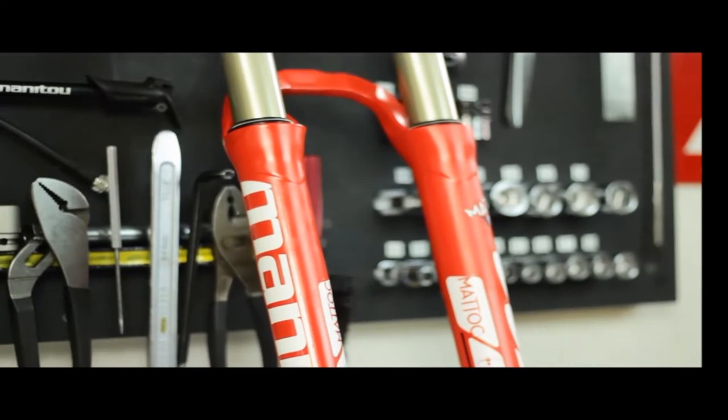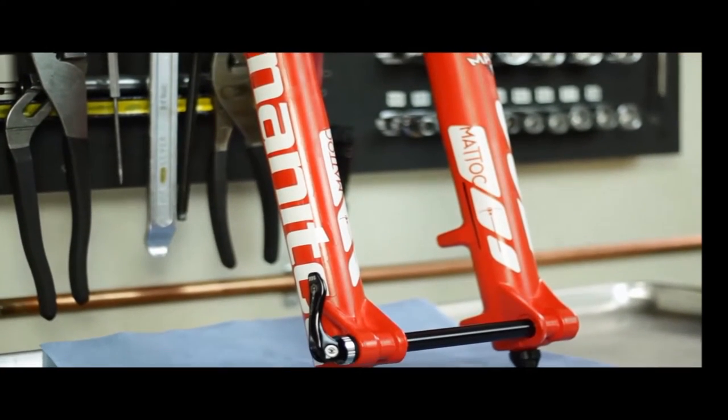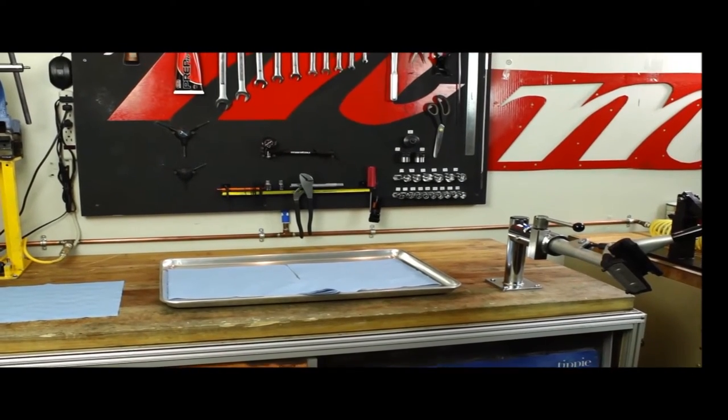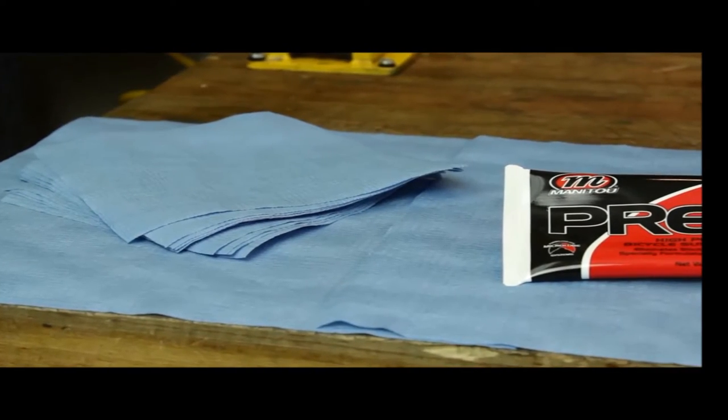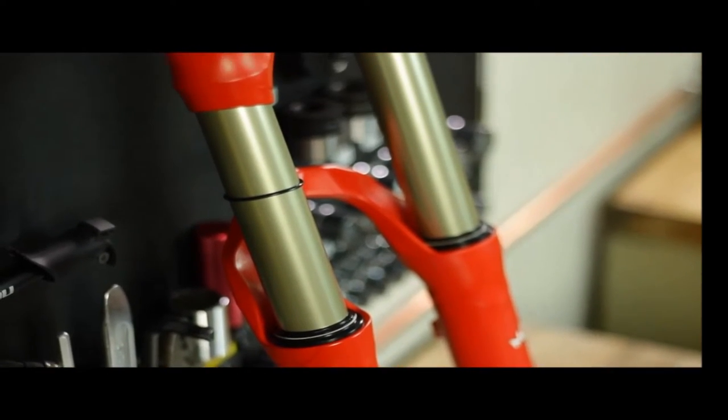When disassembling and reassembling a Matic or any Manitou suspension, be sure to work on a clean surface to prevent contamination. Be sure to use lint-free towels. Stray fibers can actually get caught between the inner legs and the seals of the outer legs causing fluid leaks.